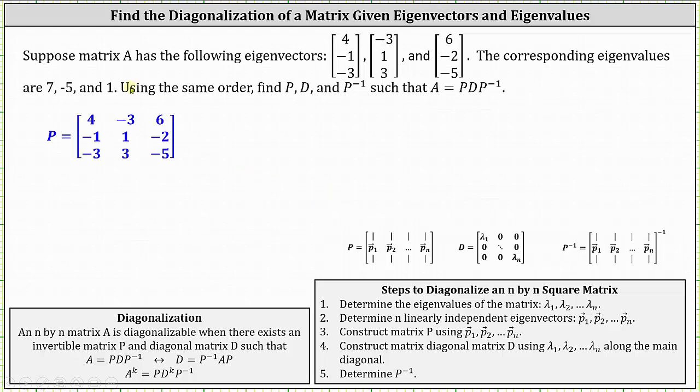So again, from the given information, we know that matrix P is formed using the given eigenvectors, where the first column is four, negative one, negative three; the second column is negative three, one, three; and the third column is six, negative two, negative five. We also know the diagonal matrix D has the entries of seven, negative five, one along the main diagonal.